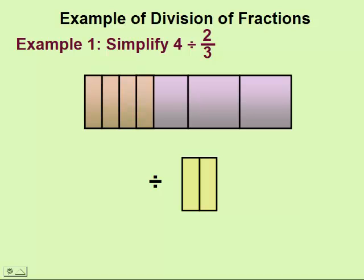One, two, three, four, five, and six. Four divided by two-thirds would equal six.